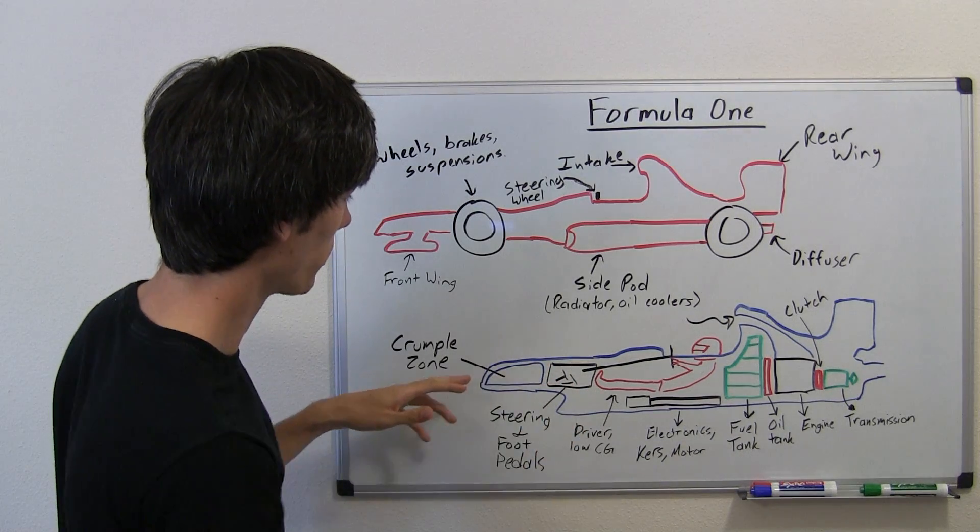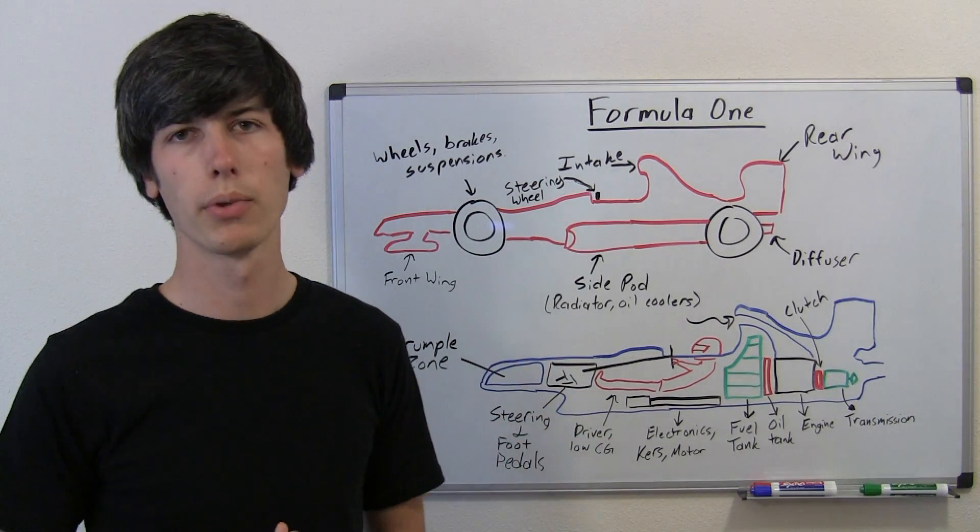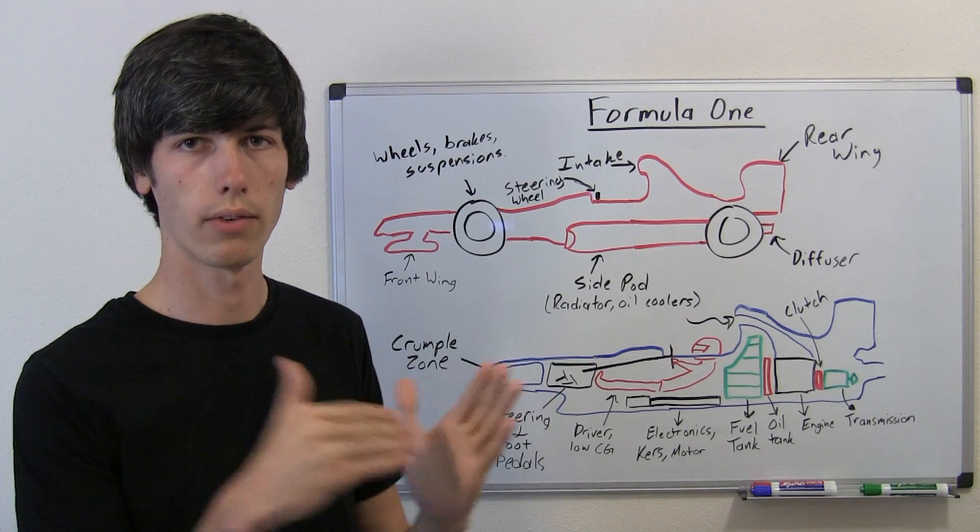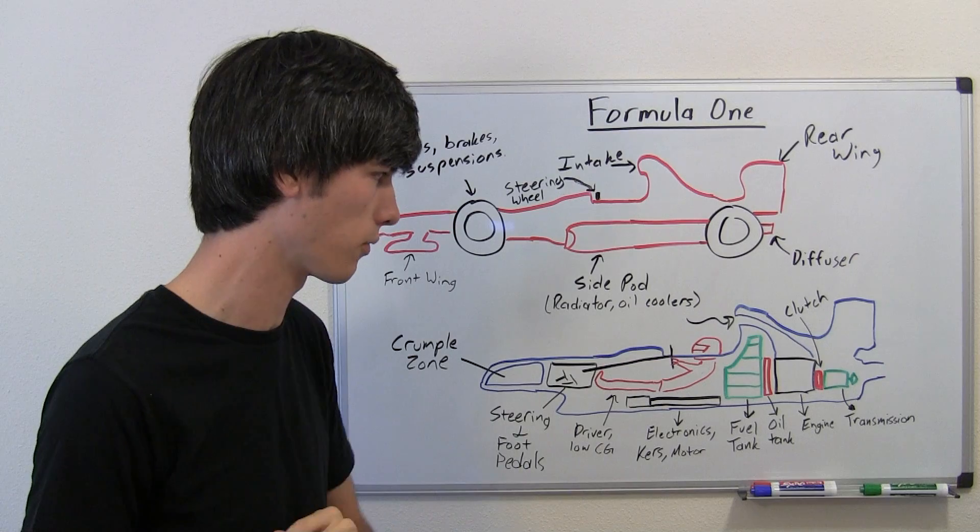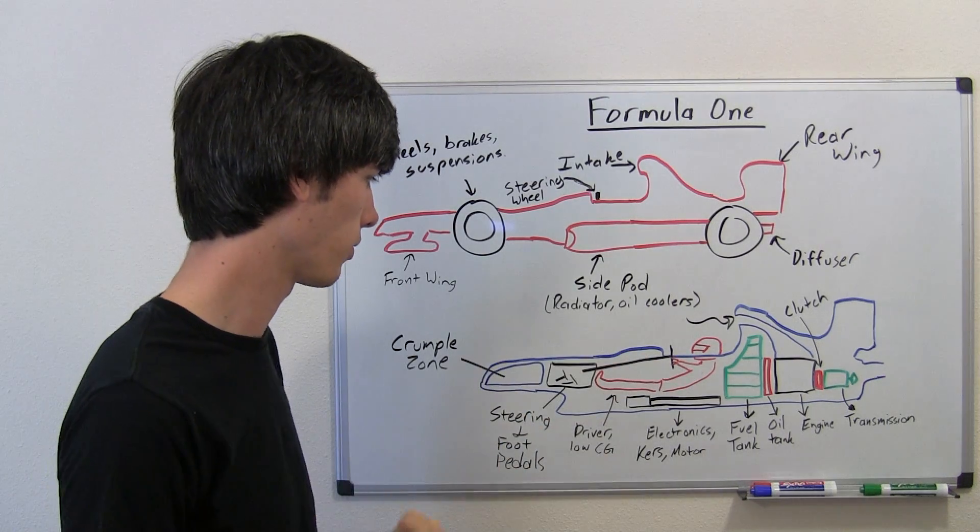So here at the front there's going to be an open space, and that's basically just a crumple zone for driver safety, so that if you have a front end impact, you've got some space for the car to crush in before you start to get affected by it. So it keeps the driver safe.